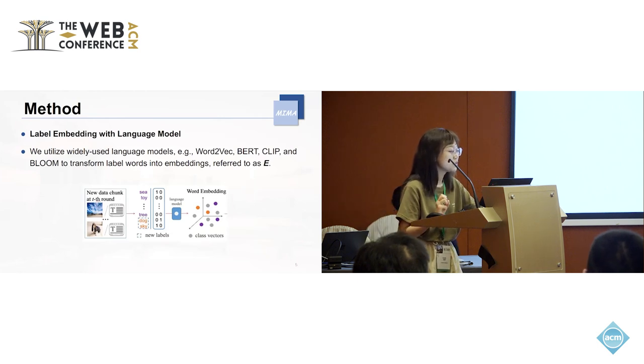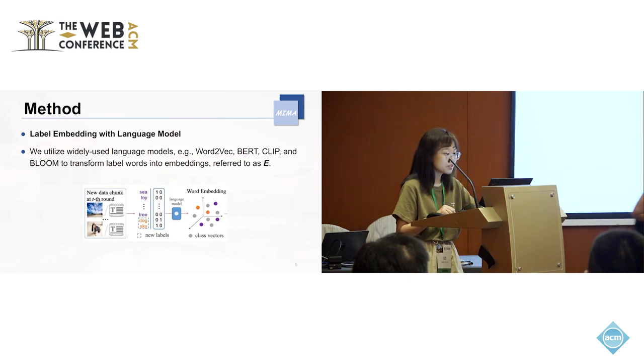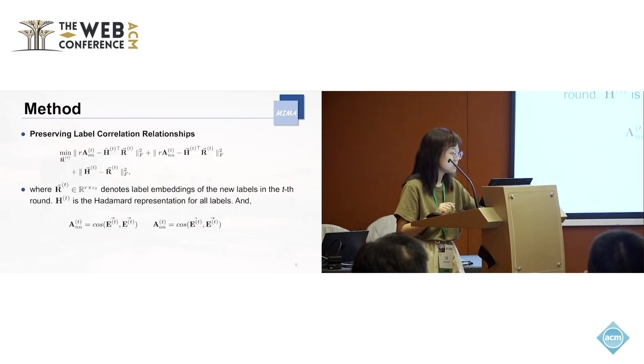To begin our work, we use a language model, for example Word2Vec, BERT, CLIP, or BLOOM, to transform the class's name into embeddings, which are denoted as E. And then we preserve label correlation relationships.